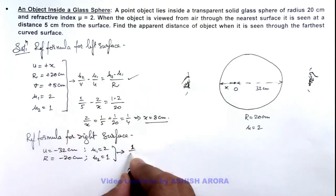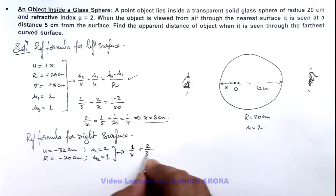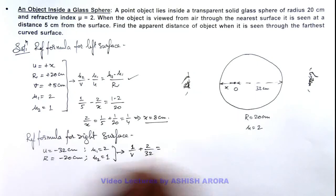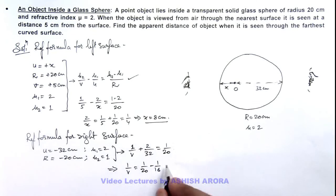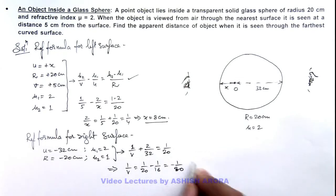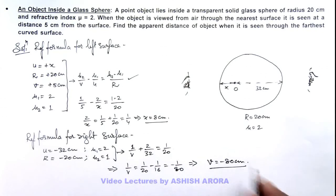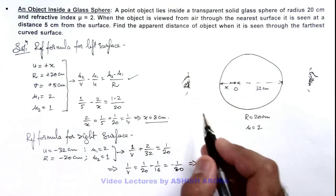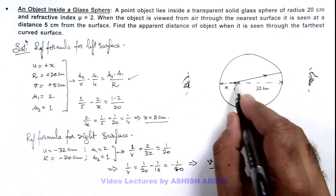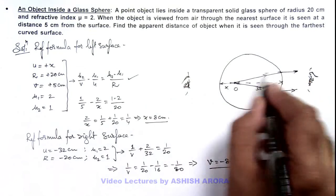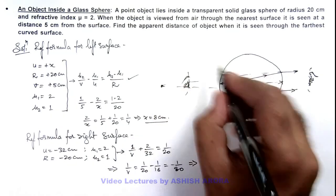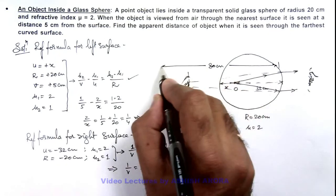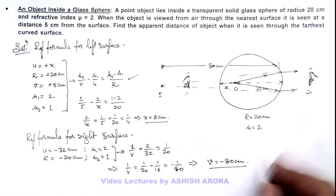Substituting: mu 2 as 1 by v, plus 2 by 32 equals 1 minus 2, that is minus 1 by minus 20, giving 1 by 20. This implies 1 by v equals 1 by 20 minus 1 by 16. Taking LCM as 80, this gives 4 minus 5 equals minus 1 by 80, so v equals minus 80 centimeter. When the observer looks from the other side, the image appears at a distance of 80 centimeter to the left of the right surface. This is the apparent position of the object as seen by the observer — the answer to this problem.